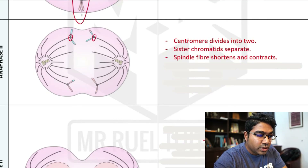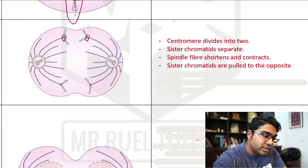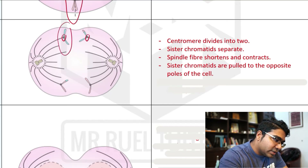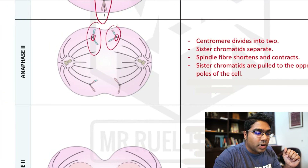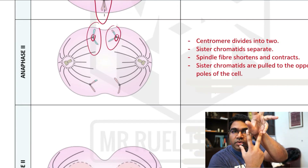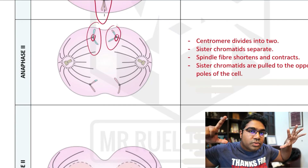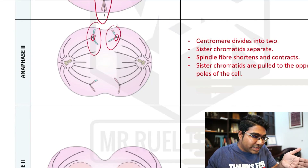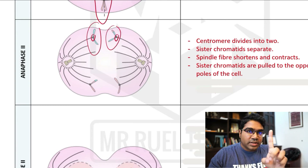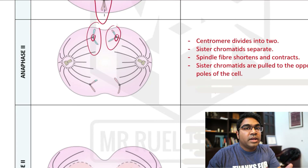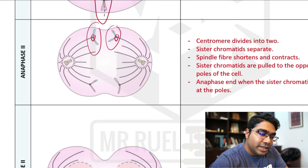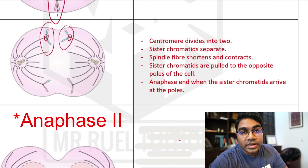The centromere divides into two, and the sister chromatids separate. Spindle fibers shorten and contract, pulling the sister chromatids to the opposite poles of the cell. In anaphase 1, it was the homologous chromosomes that were separated and pulled to opposite poles. But in anaphase 2, each chromosome is split into two and the sister chromatids are pulled to the poles. Therefore, the number of chromosomes is not halved again — it was only halved once in anaphase 1. The haploid number will still remain at the end. Anaphase ends when the sister chromatids arrive at the poles.